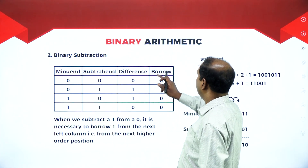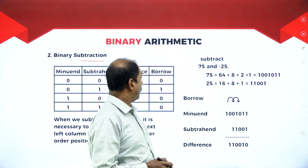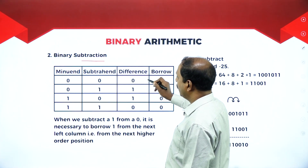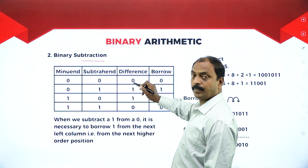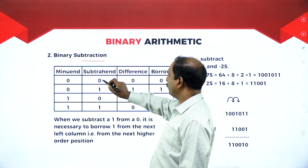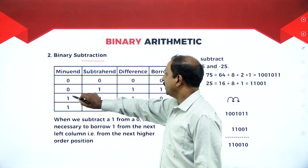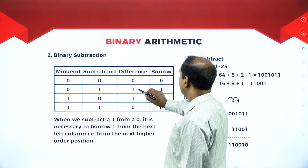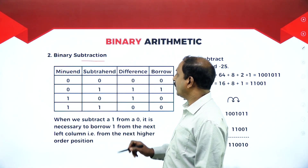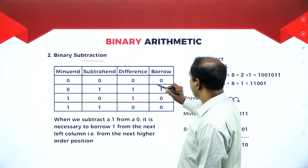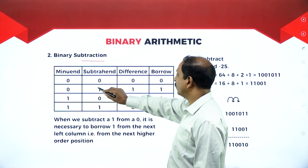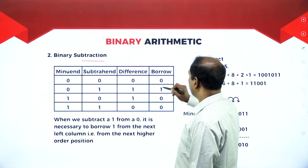Now let us move on to binary subtraction. This is a table showing minuend, subtrahend, difference, and borrow. Zero minus 0 is 0, borrow 0. Zero minus 1: difference is 1, borrow is 1 — since we cannot subtract a higher number from a smaller one, we borrow from the next higher position. One minus 0 is 1, borrow 0. One minus 1 is 0, borrow 0.